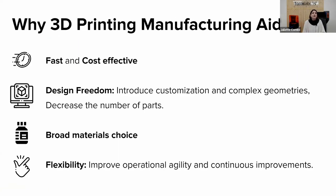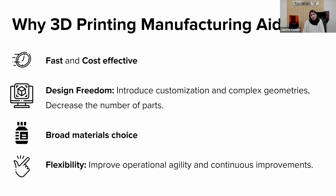So a quick overview of the reasons why we want to print manufacturing aids. First, it's fast and cost effective — it allows on-demand production of tools and solves day-to-day production issues. It also gives designers freedom in designing custom tools that match every specific job, and in building complex geometry that is difficult to manufacture with traditional methods. It also helps to simplify CAD models and decrease the number of parts for your tool.